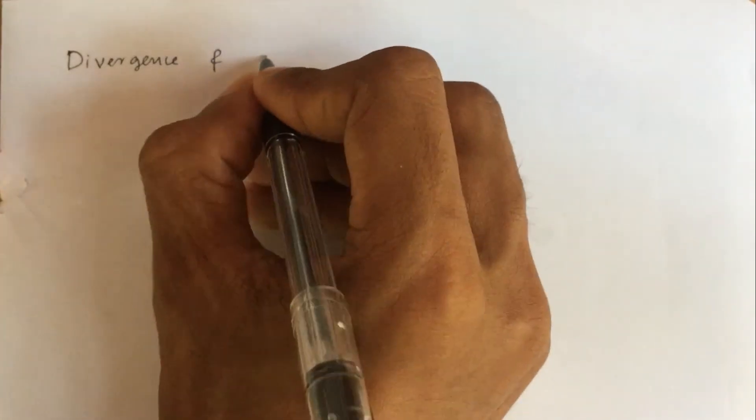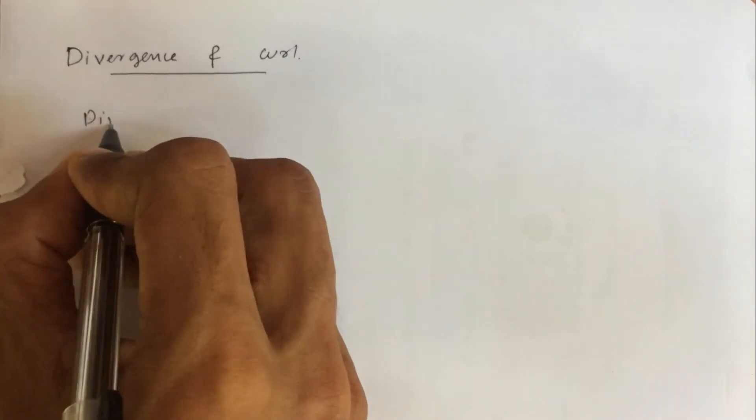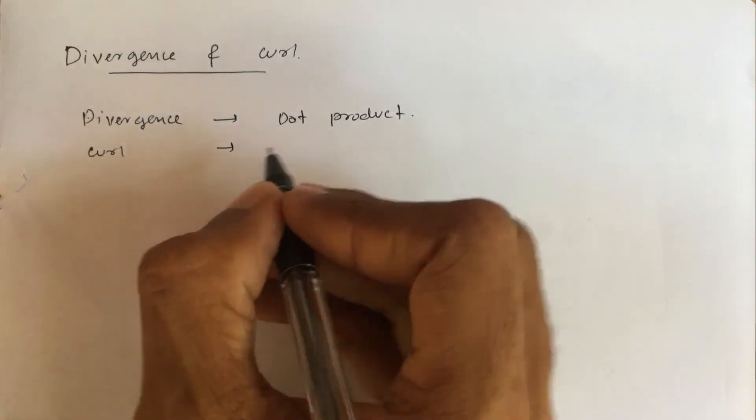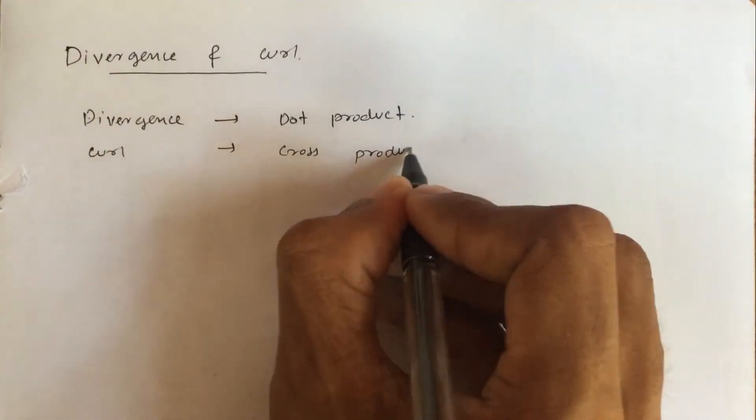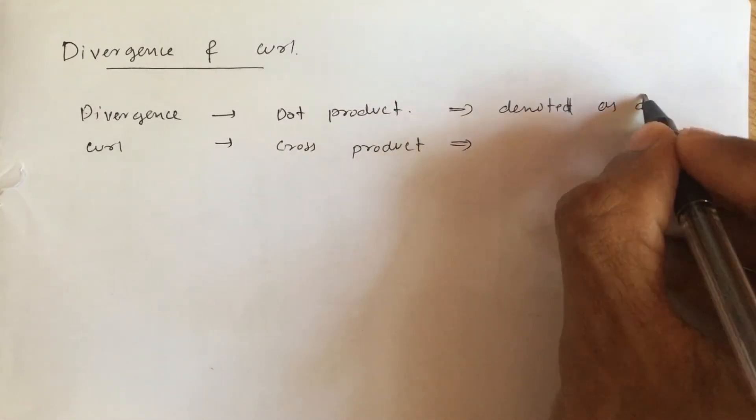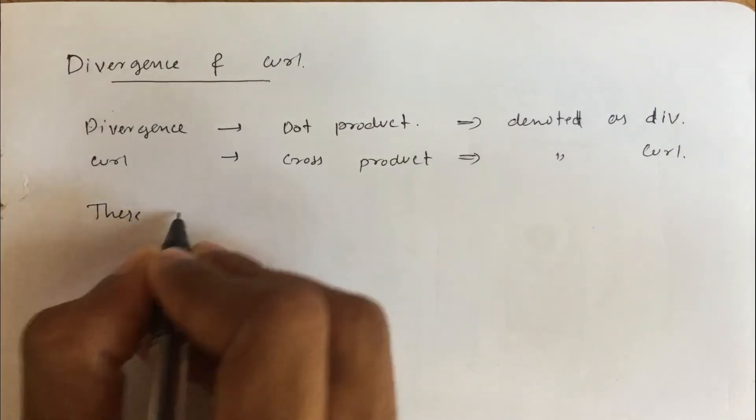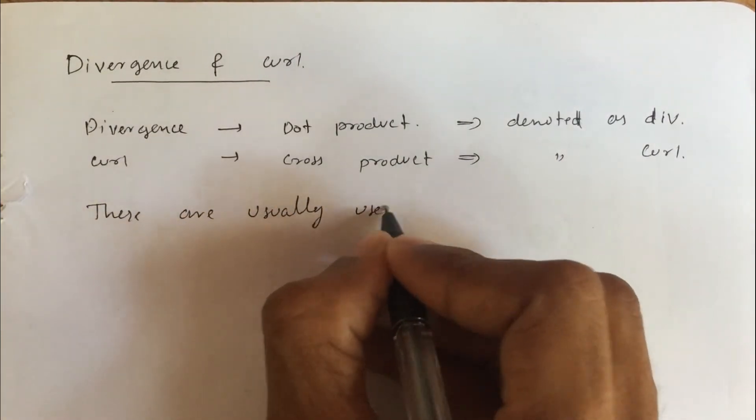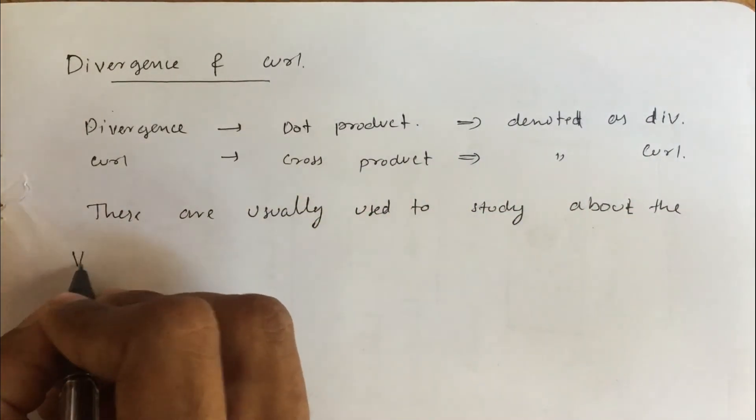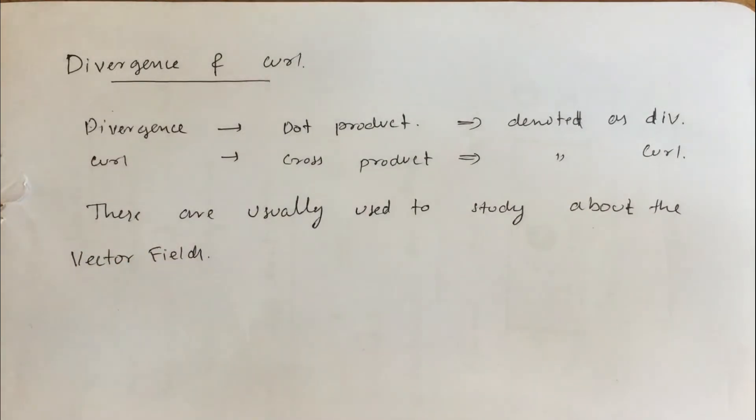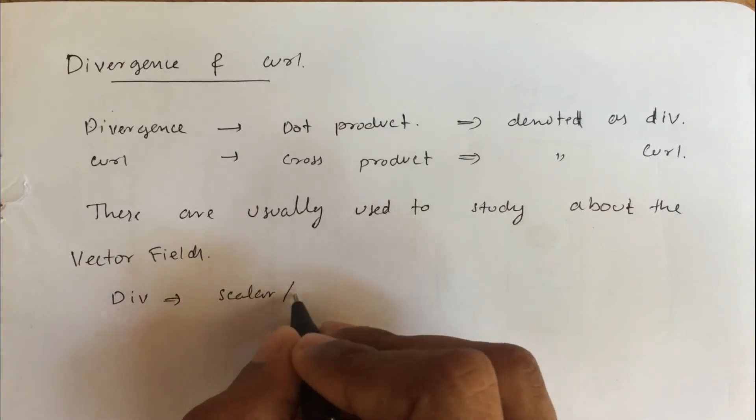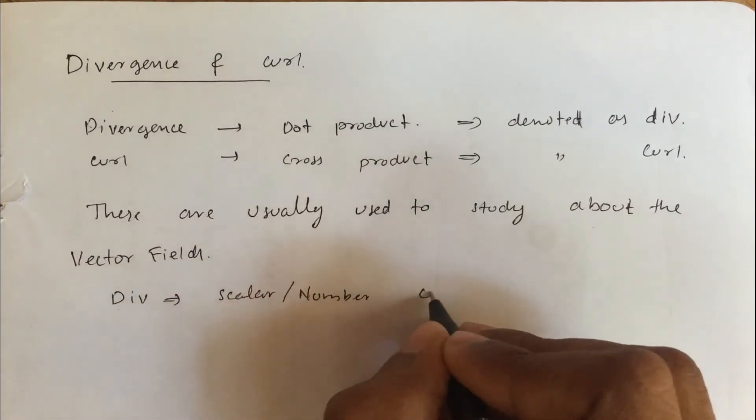Now let's talk about divergence and curl. Divergence is the dot product and curl is the cross product. These are denoted as div and curl. These are usually used to study vector fields. Divergence gives a scalar or a number, and curl gives a vector.